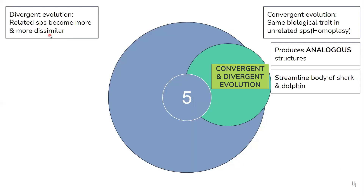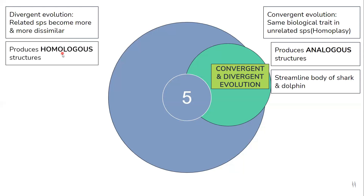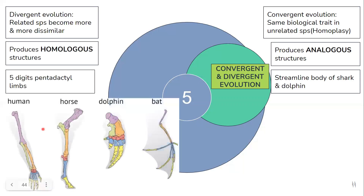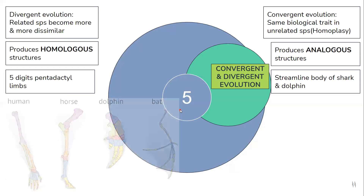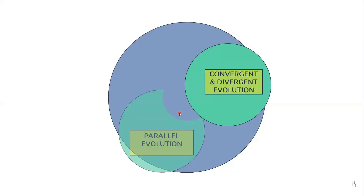Divergent evolution gives rise to homologous structures. An example is the five digits of the limbs. Here we have different limbs of related species — all mammals — however you can see the structure is very different in each case. So this is an example of divergent evolution.